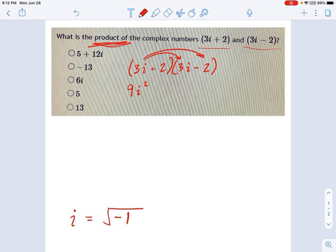And then we're going to take the outer terms, 3i times negative 2, that's going to be negative 6i. Then the inner terms right here, that's going to be positive 6i. And the last terms, positive 2 times negative 2, that comes out to be negative 4.